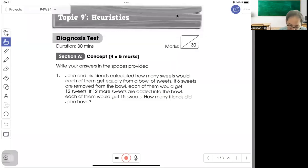Welcome to P4 Heuristics. Let's do some questions. John has sweets to share. How many sweets will each of them get equally from the bowl of sweets? If 6 sweets are removed, each of them will get 12. If 12 more are added, each of them will get 15. How many friends did John have?